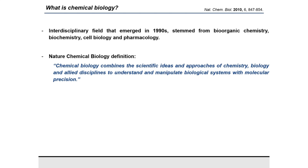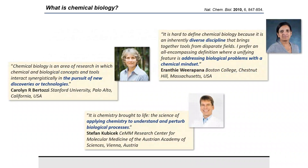Nature Chemical Biology, the journal, defines it as: chemical biology is the field that combines the scientific ideas and approaches of chemistry, biology, and many disciplines to understand and manipulate biological systems with molecular precision. However, the definition of the field goes well beyond that. I'd like to recommend an article from Nature Chemical Biology 2015 that asked many academics how they define it. Key highlights include the emphasis on the diversity of this discipline and its focus on new discoveries or technologies, trying to address biological problems with a chemical mindset, always applying chemistry to understand and perturb biological processes.